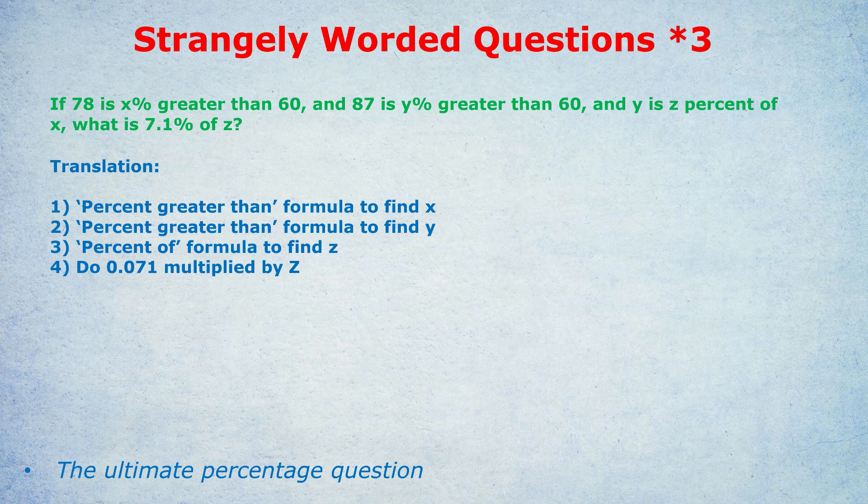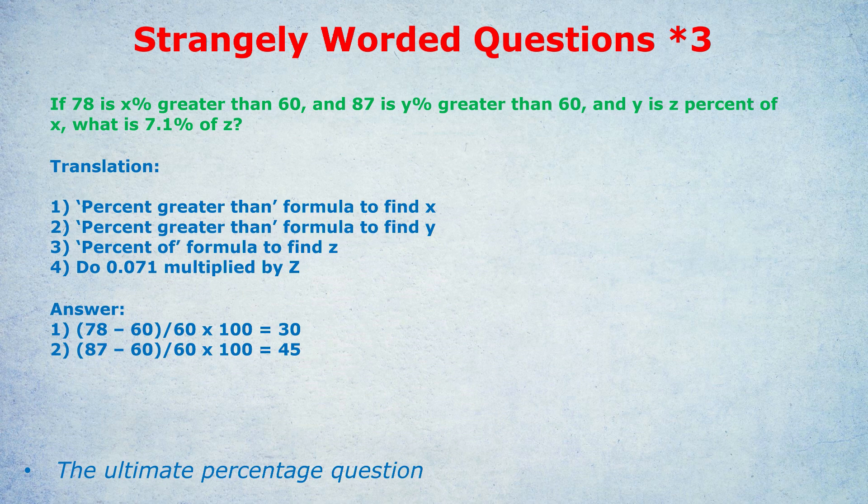Let's do this step by step. The percent greater than formula is new minus old over old times 100. I've done a video on this. If you're not sure which one's the old or the original, it's always the one after the word than. So here I know that 60 is my old because it comes after the word than.